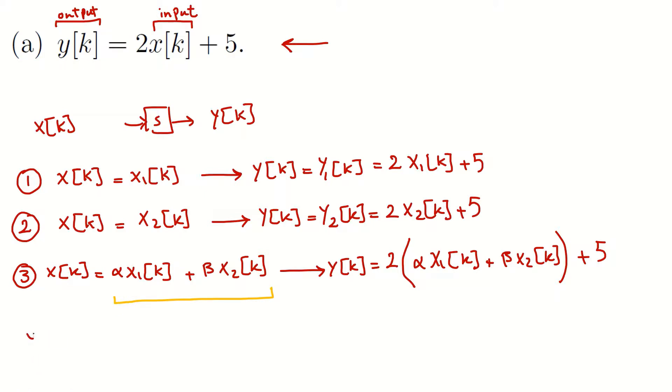Okay, so I can say yk, the output for this input is alpha 2 times input is alpha 2 x1k plus beta 2 x2k plus 5.